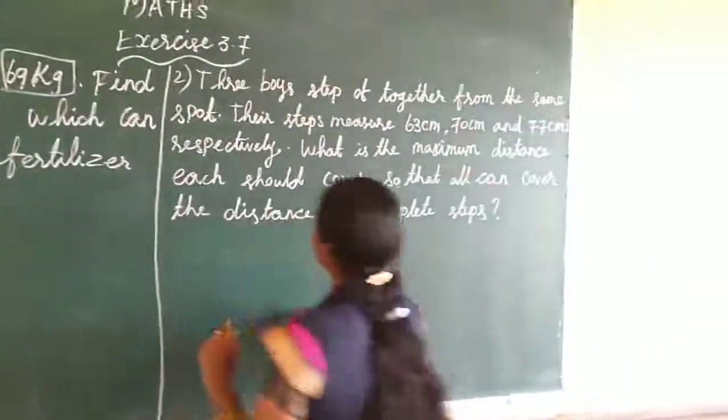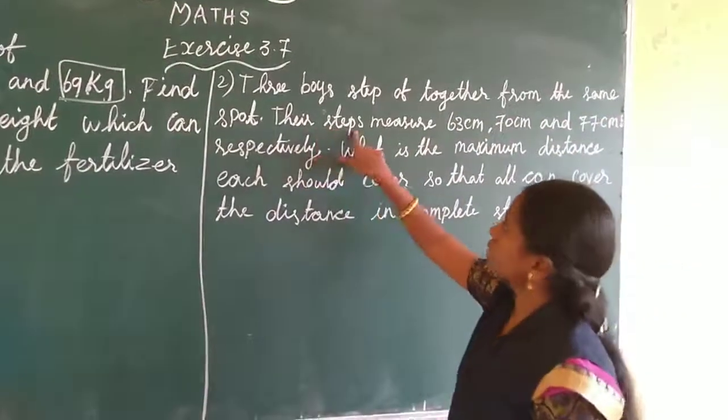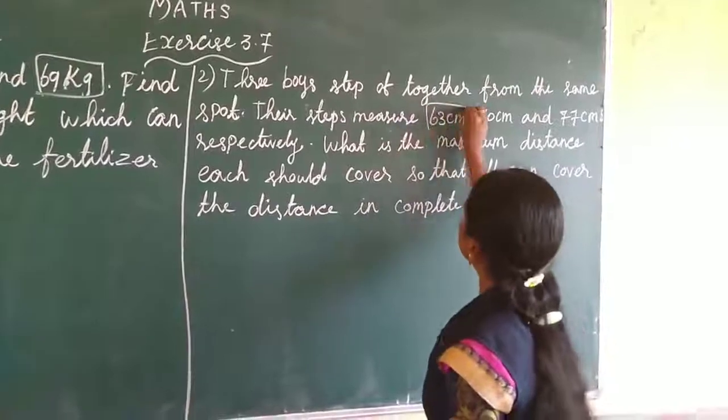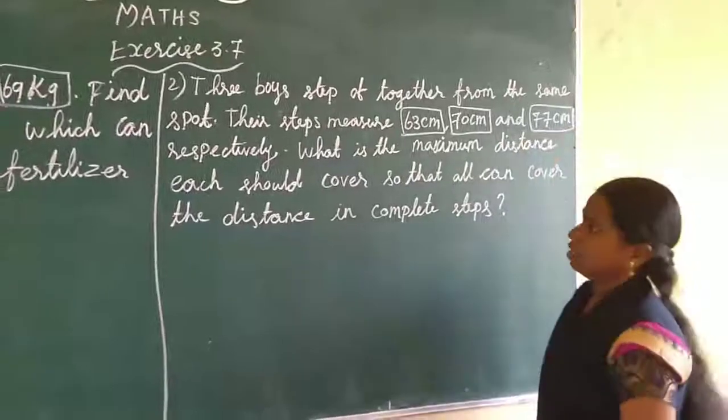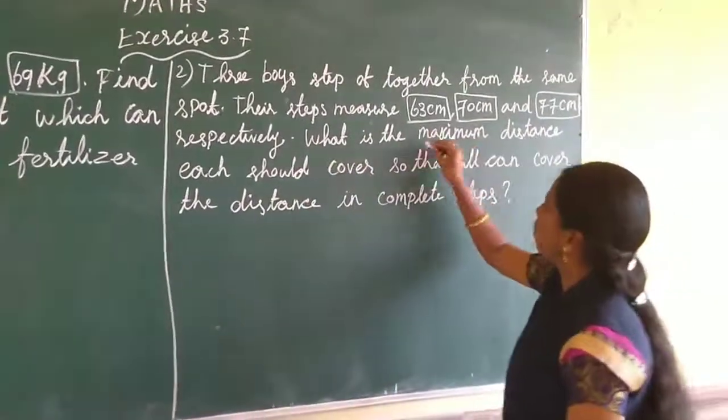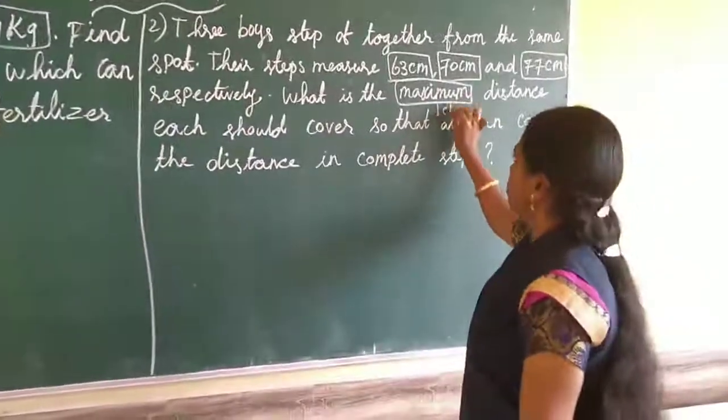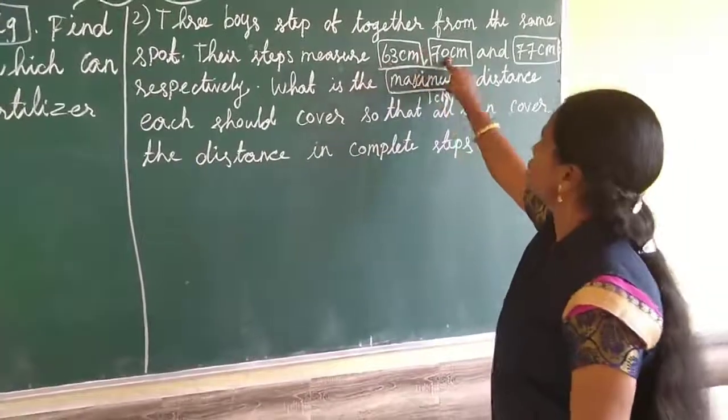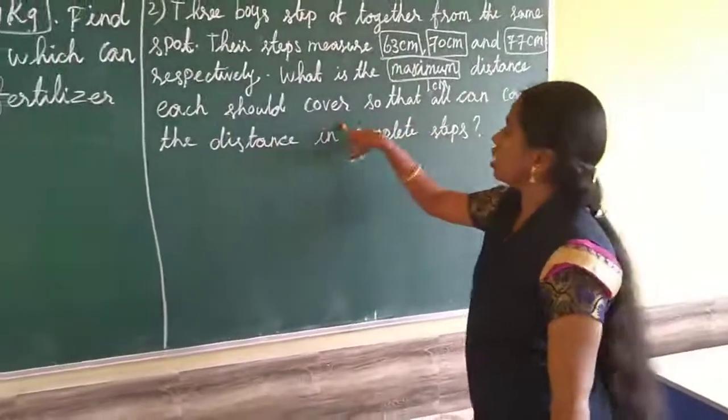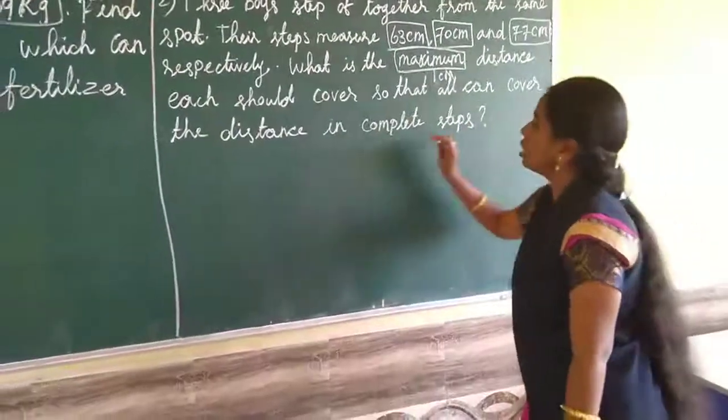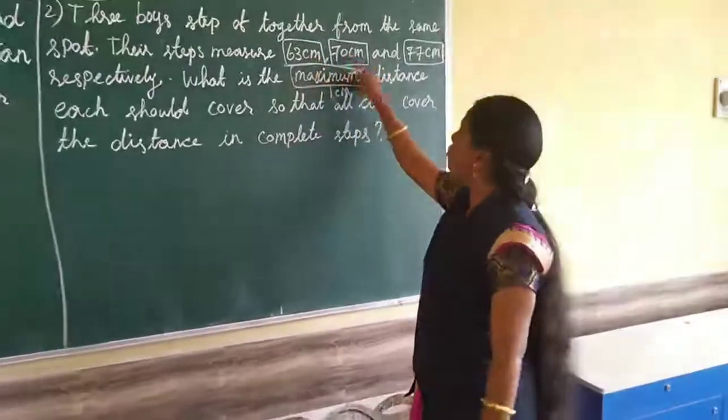See the second sum. Three boys step off together from the same spot, their steps measure 63 centimeter, 70 centimeter and 77 centimeter respectively. What is the maximum hint word? They have maximum, so we want to find out the LCM. The numbers are 63, 70 and 77.